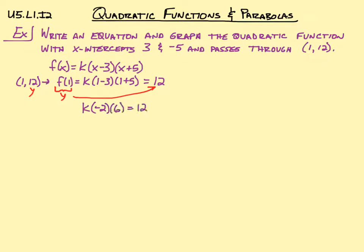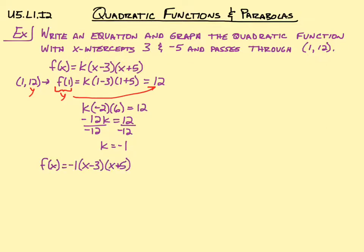So k times negative 2 times 6 equals 12. Simplifying: negative 12k equals 12, so k equals negative 1 after dividing by negative 12. Now we rewrite the equation: f of x equals negative 1 times x minus 3 times x plus 5. That's the specific function for these two intercepts passing through that point — it will open downwards because k is negative.